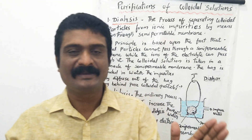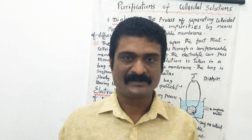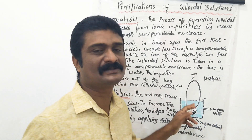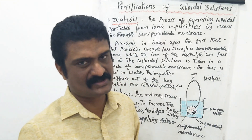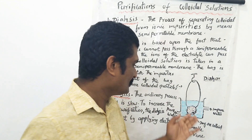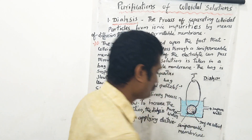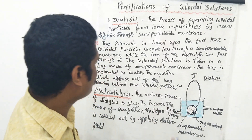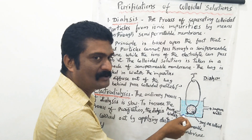How can we carry out the process of dialysis? The impure colloidal solution is taken in a bag made up of semi-permeable membrane. The bag is then suspended in water.